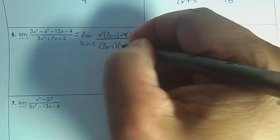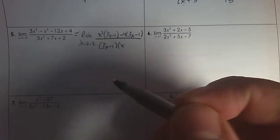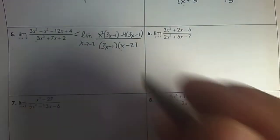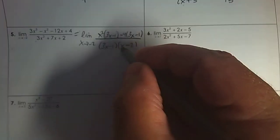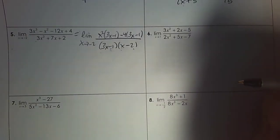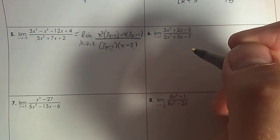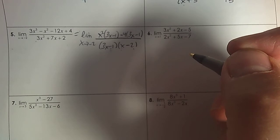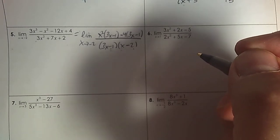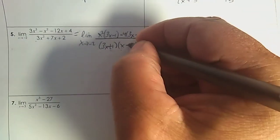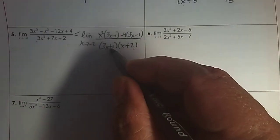If that's the case, 3x times x is 3x squared, and negative 1 times negative 2 is positive 2. Make sure the middle term works: negative 1x and negative 6 — this should be 3 plus. Because it's plus, and it does work with plus, it's not 3x minus 1 that's being divided out. So I need to go further.